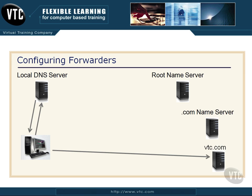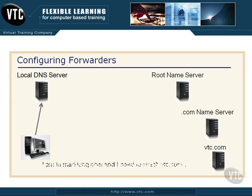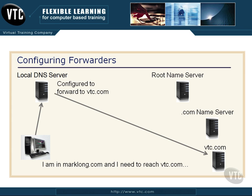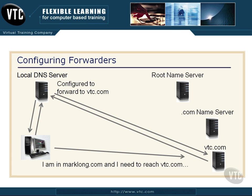Now, there was a lot of movement — to a root name server, to the .com name server. And if I already know that a lot of my clients in my network are going to be connecting to vtc.com, I should set up a forwarder. This time, we type vtc.com in our browser from marklong.com, and we have configured our DNS server to forward to vtc.com. Instead of going through the root name server and the .com server, it goes straight to vtc.com, sends back the IP address, the client gets it, and then they can connect to the machine.